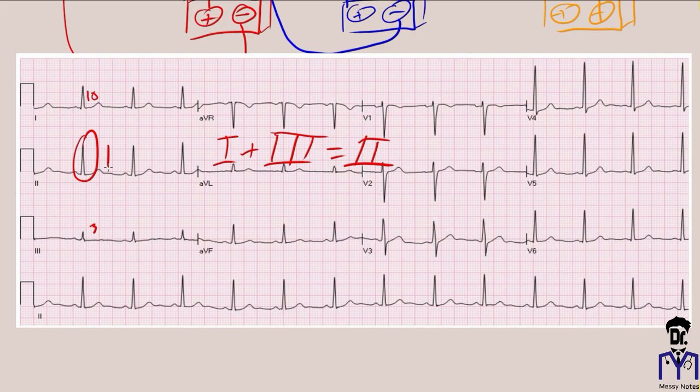This gives us an opportunity to see where the leads we just talked about appear on an EKG printout: Lead I, Lead II, and Lead III. We are one-third of the way there — next we will do our augmented leads.